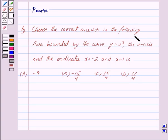Choose the correct answer in the following. The question is: area bounded by the curve y = x³, the x-axis, and the ordinates x = -2 and x = 1 is: